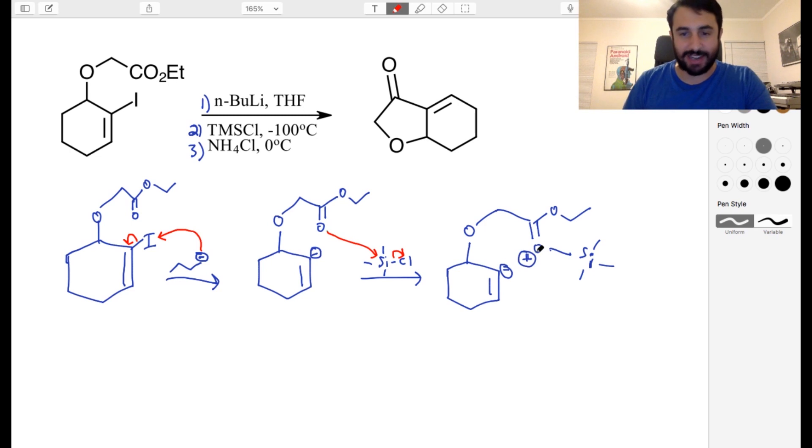Now the negative charge cannot attack the oxygen because this already has one lone pair, right? So it cannot accommodate any more electron density. But what this can do is attack right here, and then this will neutralize that.